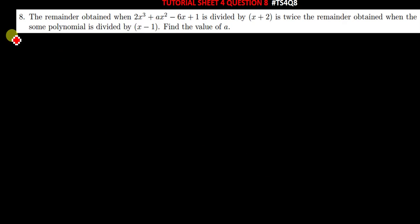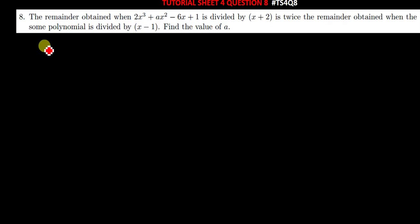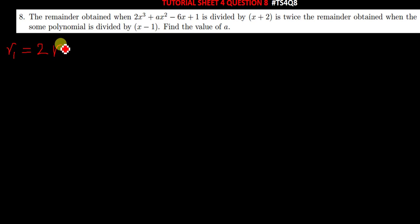So what they are telling us is that here we have remainder 1 and remainder 2. When you divide, the answer that we get — the first remainder — is twice the second remainder. So r1 is equal to 2 times r2.